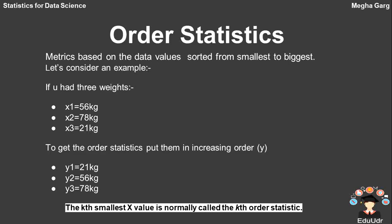Our last topic is order statistics. As the title suggests, this refers to a sample arranged in ordered form based on data values sorted from smallest to largest. For example, with three weights — x1: 56 kg, x2: 78 kg, x3: 21 kg — putting them in increasing order gives us 21 kg, 56 kg, and 78 kg. The smallest value is normally called the first-order statistic, or the kth order statistic more generally.